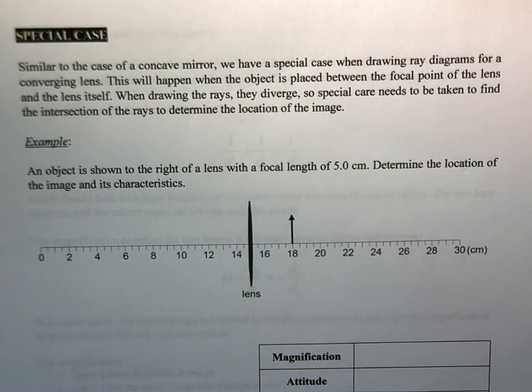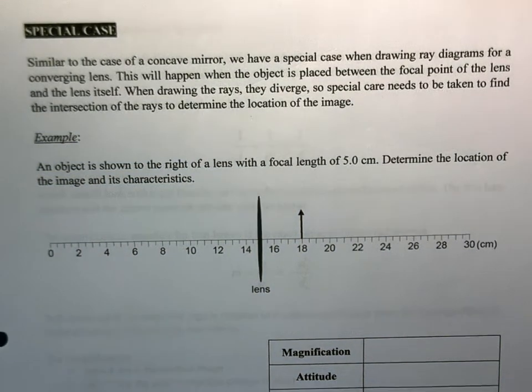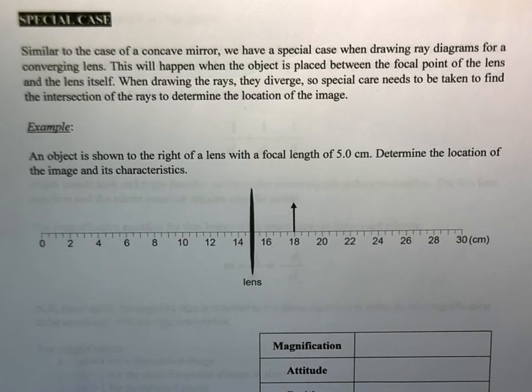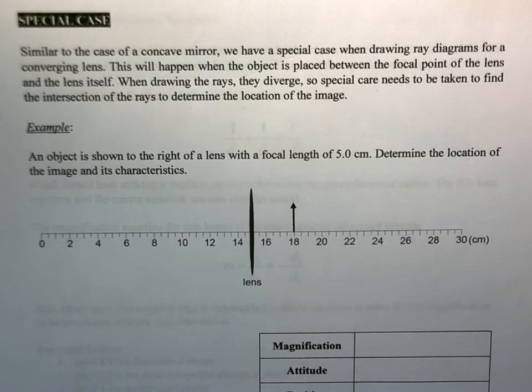Alright, we want to look at the special case for lenses. Just like with the concave mirror, we have a special case with the converging lens. What's going to happen here is we're going to have that case where the object is placed between the converging lens and the focal point.